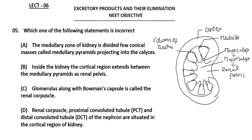So statement one — medullary zone divided into medullary pyramids projecting into calyces — is correct. Statement two says the cortical region extends between medullary pyramids as 'renal pelvis' — that is wrong, because that region is the column of Bertini, not the renal pelvis. So statement B is the incorrect statement.